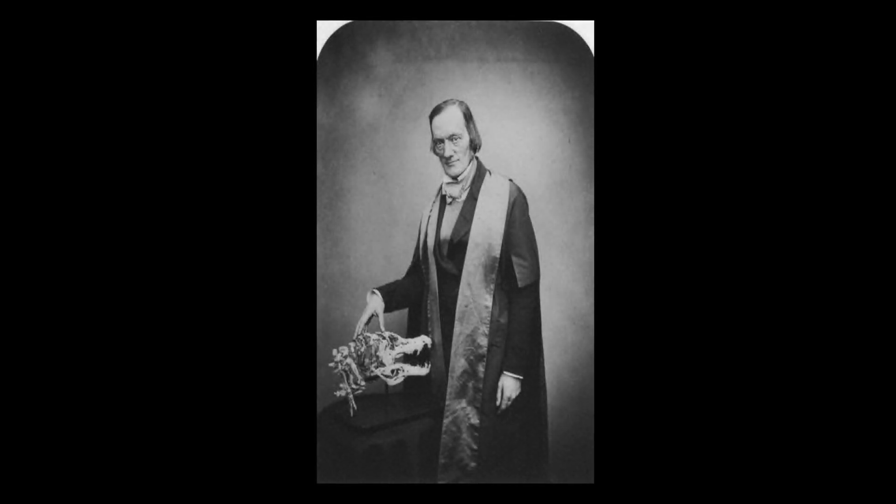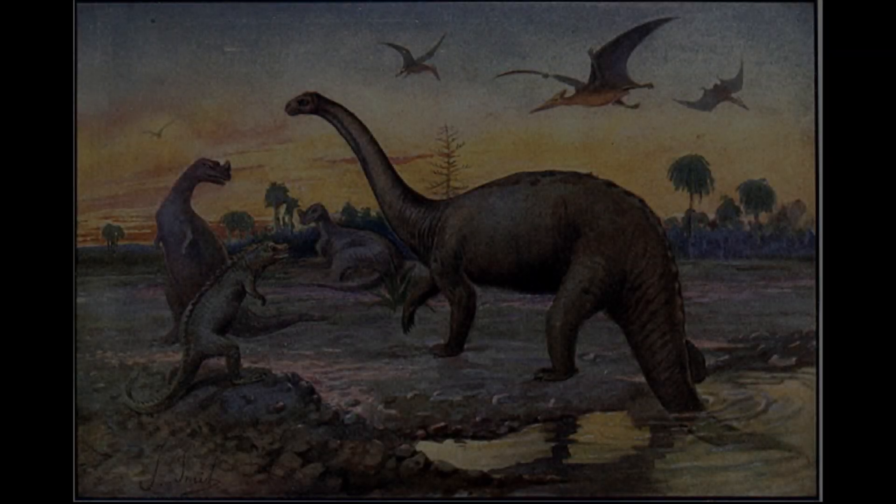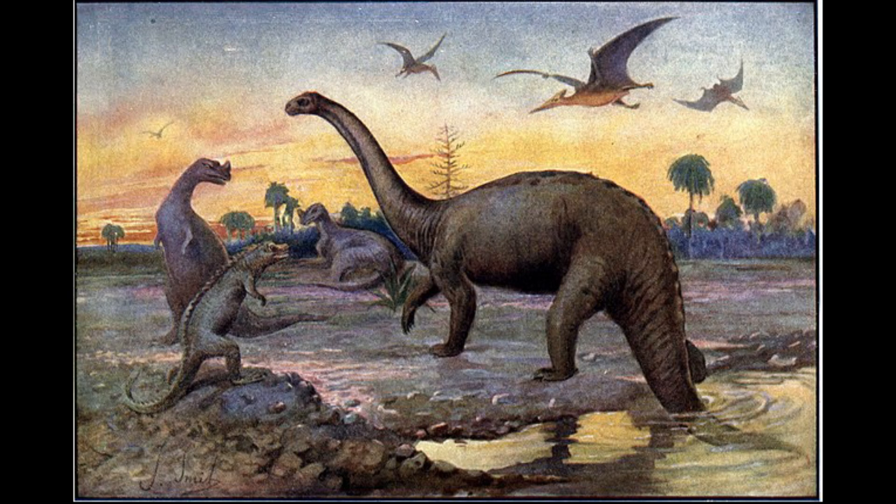In 1842, the English paleontologist Sir Richard Owen gave the definition dinosaur for a group characterized as a distinct race or subgroup of sauropoid reptiles. The term comes from the Greek words Dinos and Sauria, meaning terrible lizards.